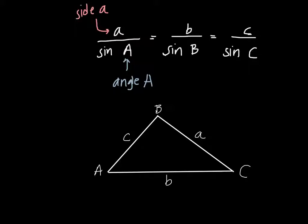So if we're looking at our triangle, we have a over sine A, b over sine B, and c over sine C.